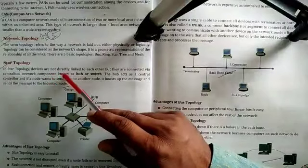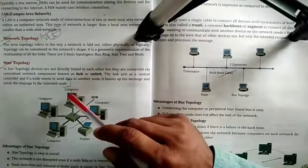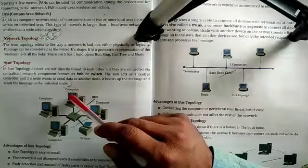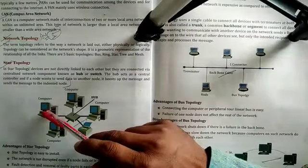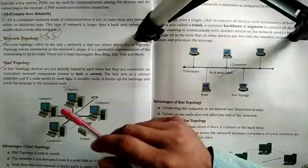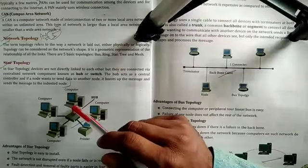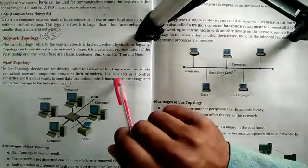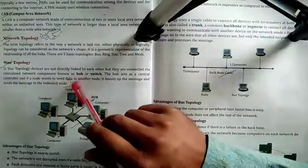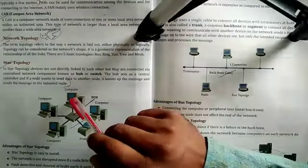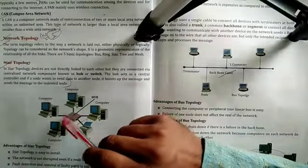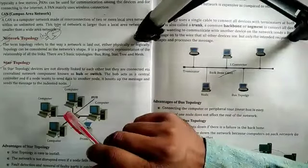According to the definition of star topology, devices are not directly linked to each other. This is node 1 and this is node 2 — node 1 is not directly linked to node 2. The hub acts as a central control. If a node wants to send data to another node, it first sends the data to the hub or switch, and then the hub transfers the data to the destination node.